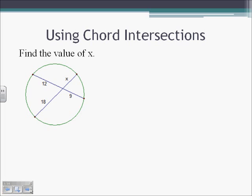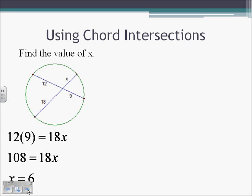We can use that to find X. Here we know X times 18 is going to equal 12 times 9. So 108 is going to equal 18X. Divide both sides by 18, X is going to equal 6.